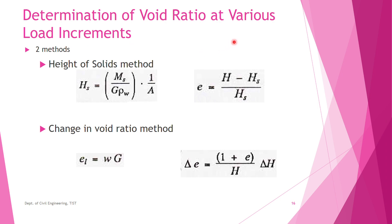As discussed in earlier videos, the consolidation test results are expressed as a plot between void ratio and pressure. After the test, we present the data using a graph of void ratio versus pressure. To plot this curve we need the void ratio at various load increments, and we will study two methods: the height of solids method and the change in void ratio method.